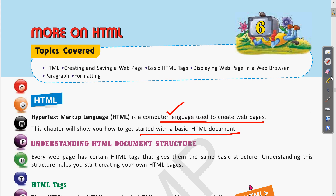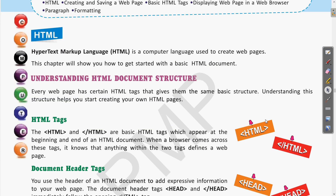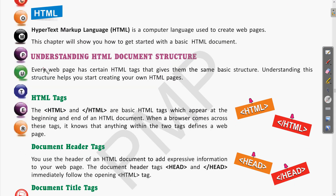Let us see the basic structure of an HTML document. Understanding HTML document structure: every web page has certain HTML tags that give it the basic structure. HTML pages have tags written in angular brackets. There are different various types of tags, and once we understand these tags it will be easier to use them. According to the need — if a table needs to be inserted or an image needs to be included — we can use these tags in our web pages.